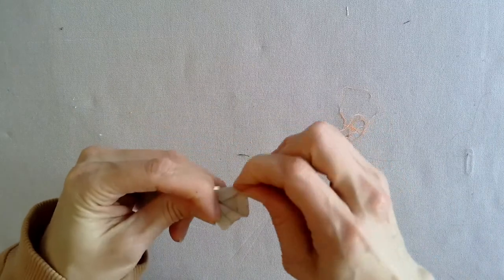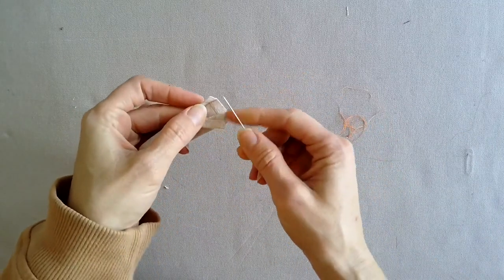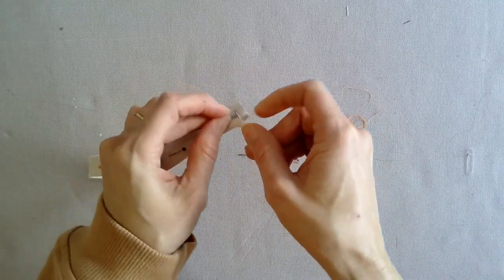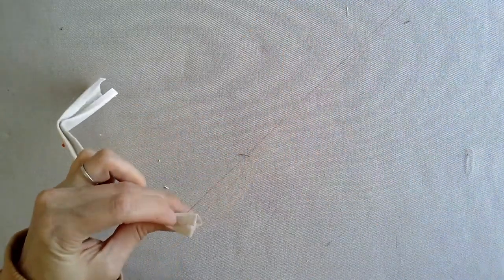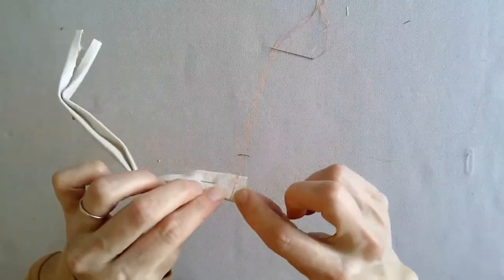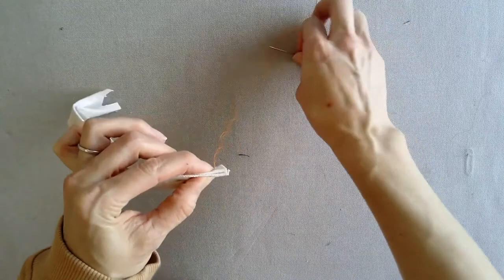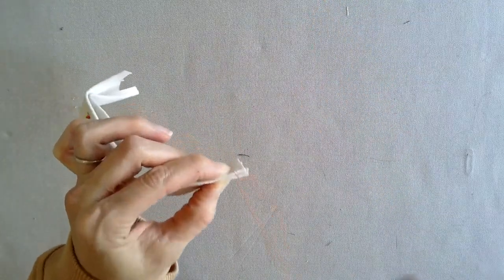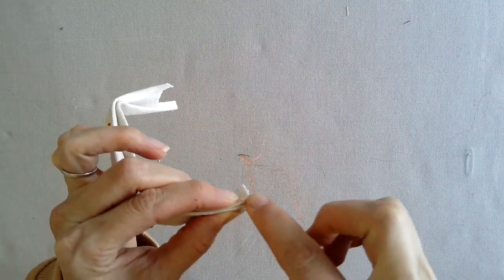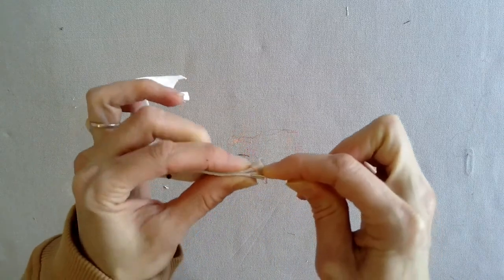With a threaded needle with one end knotted, place the needle on the inside of the folded fabric one quarter inch into the fabric where the drawn lines of the seam allowance meet. Pull the needle and thread from the outside of the fabric.